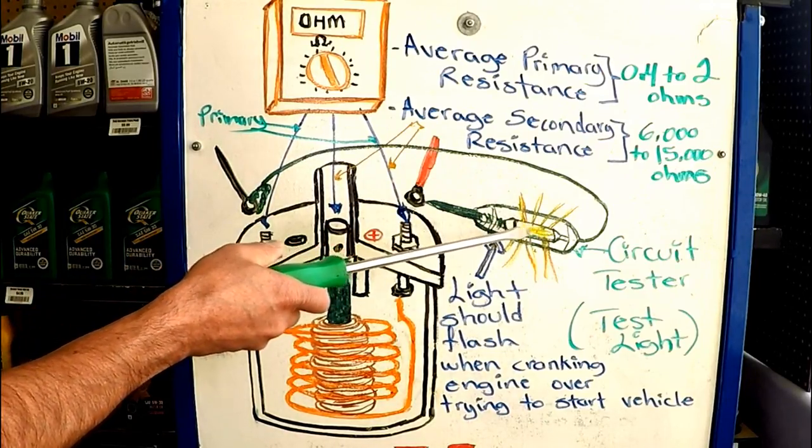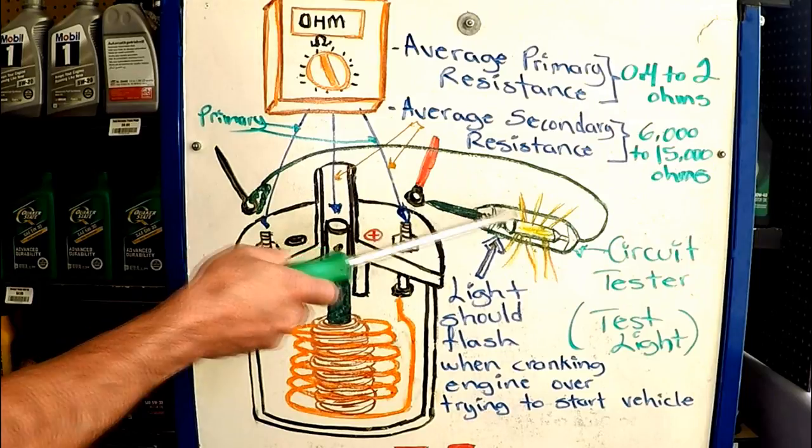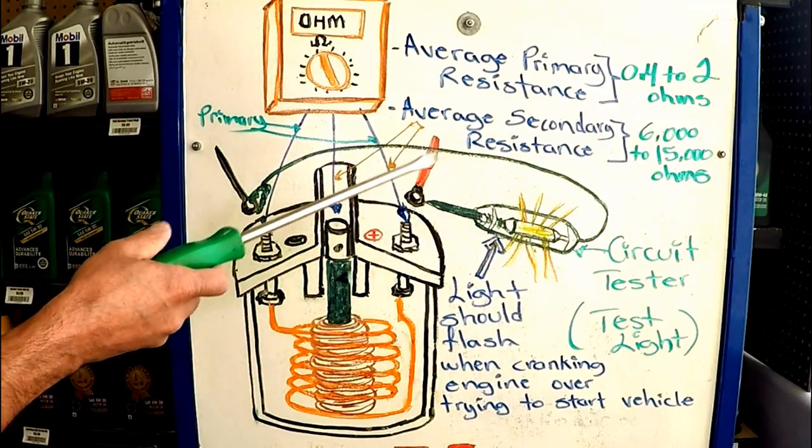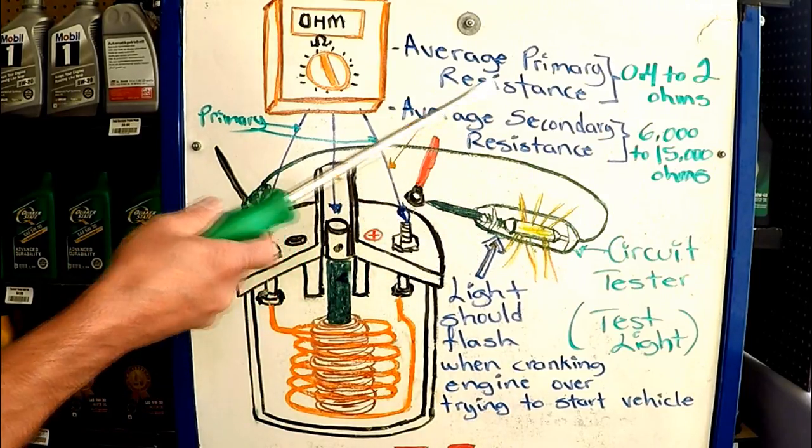And when the test light flashes on and off, that is telling you that the circuit that sends the signal to the ignition coil is operating properly. And if the light doesn't flash, whether it stays on or it's just not on at all, you have a problem. Pick up coil, crank sensor.